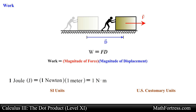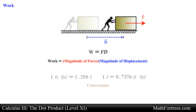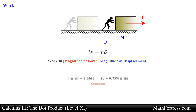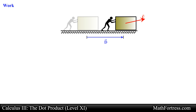In the US customary system the unit of force is the pound-force and the unit of distance is the foot, so the unit of work is the foot-pound. We can convert from one system to another by using the following conversions. Now how do we find the work done if the object is pushed with a constant force that is not pointing in the same direction as the displacement?